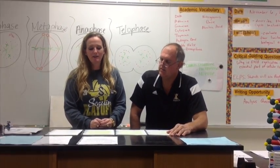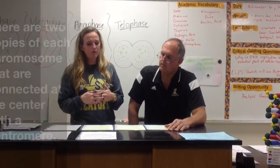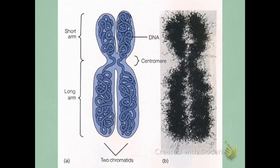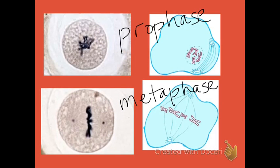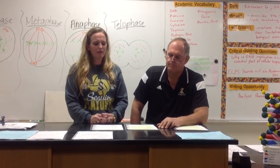Next is metaphase. Metaphase is when all of the pieces are winding up for the big split. The DNA lines up along the middle of the cell, and the chromatin has condensed into chromosomes. There are two strands of chromosomes connected at the center with a centromere. Notice the two chromatids and the centromere in the center. We can remember this by thinking metaphase means middle.